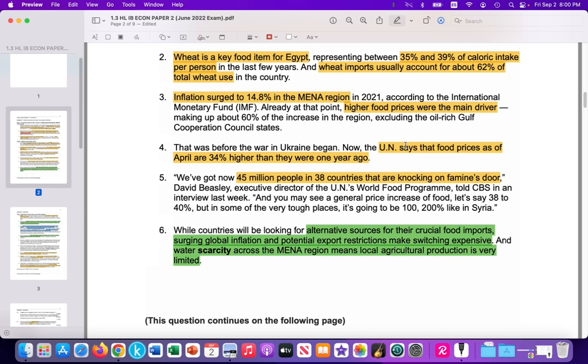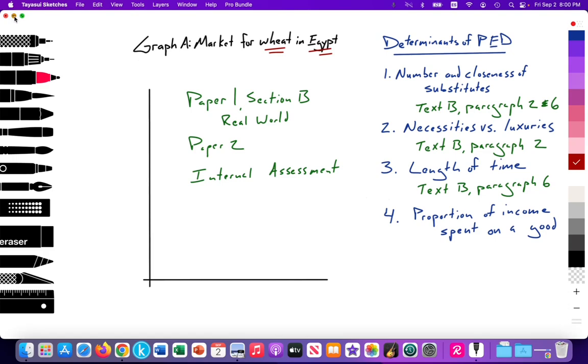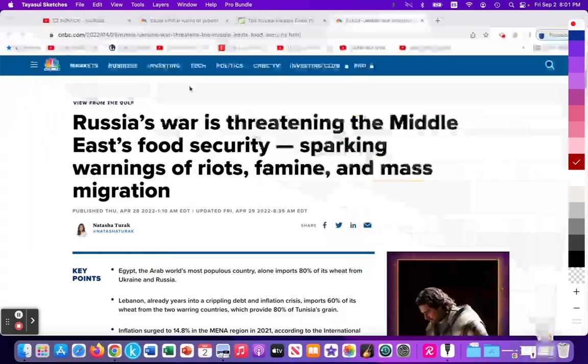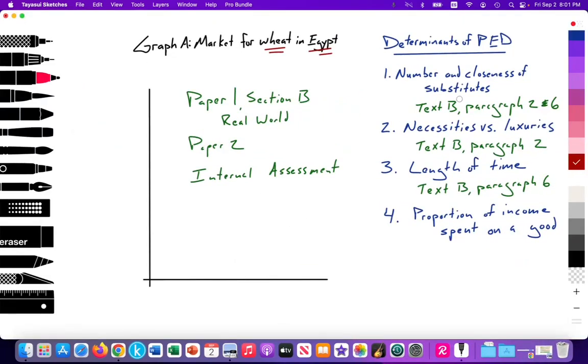In addition, we can also say that food is a necessity. Paragraph 2 and 6, in terms of alternatives, it states here in paragraph 6, while countries will be looking for alternative sources for the crucial imports, that's difficult because the prices of those substitutes are also rising. So there's a lack of substitutes. So that would mean that the PED is relatively inelastic. Lack of substitutes means that PED is relatively inelastic. So PED for food would have a value less than 1. In terms of necessities versus luxuries, food by definition is a necessity. You cannot live without it. And text B, paragraph 2 would also highlight the Egyptians 40% of their food intake is wheat, food, wheat, and necessity.